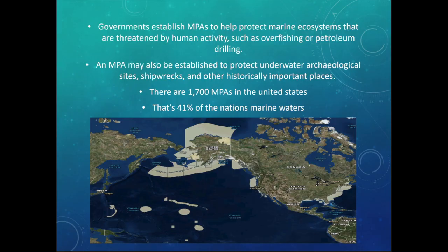Let's talk more about MPAs — I'll tell you a little about the history, the ones down here, and some others around the world. The goal of an MPA is to protect marine ecosystems that are threatened by human activity such as overfishing. These MPAs help control what's going on with humans and put rules in place so we can't exploit that area too badly. An MPA may also be established to protect underwater archaeological sites, shipwrecks, and other historically important places.